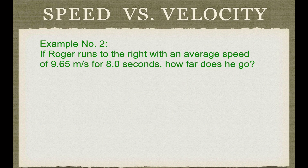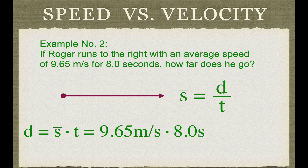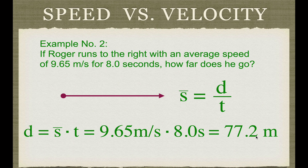Example two: Roger is running to the right with an average speed of 9.65 meters per second for 8 seconds. We want to know how far he went. Rearranging the speed equation, distance equals average speed times time: 9.65 meters per second times 8 seconds. Seconds cancel and we're left with meters: he covers 77.2 meters.